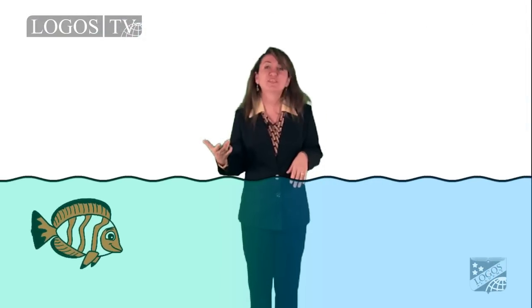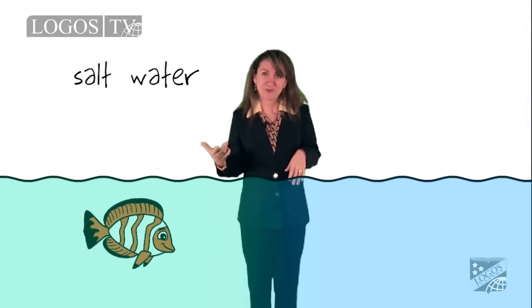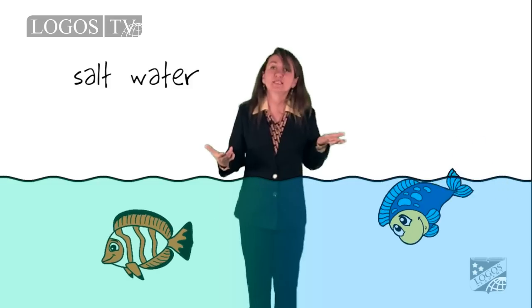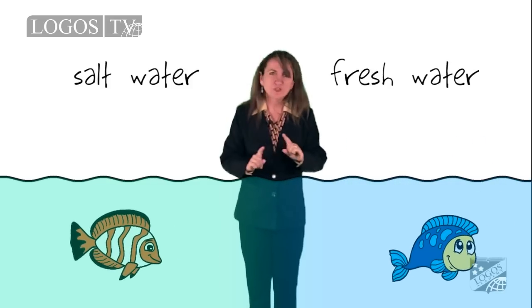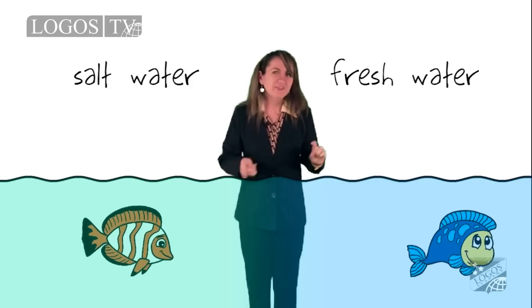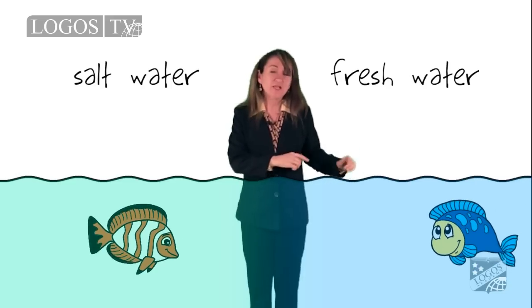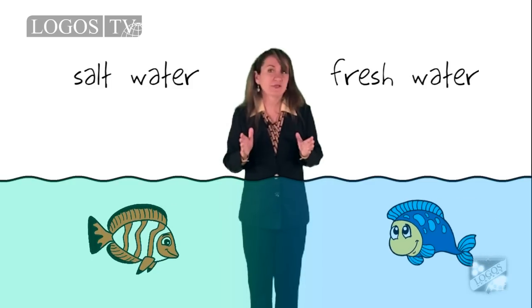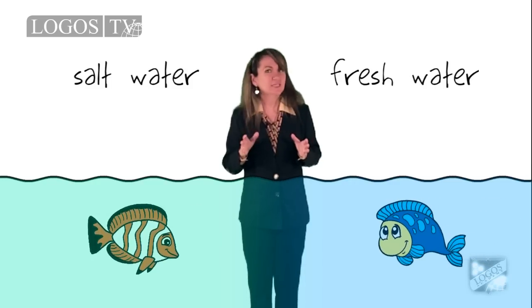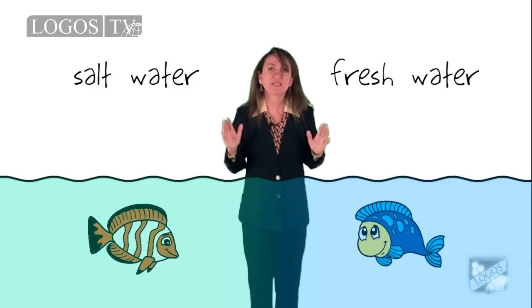Think about fish. Ocean fish live in salty water. River fish live in fresh water. Ocean fish would not survive in fresh water. That is another example of how abiotic factors influence life in an ecosystem.